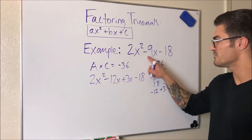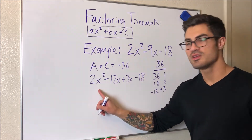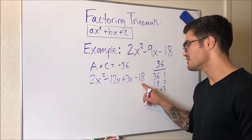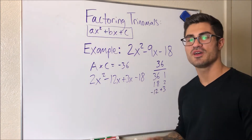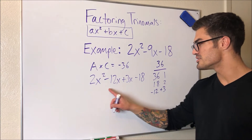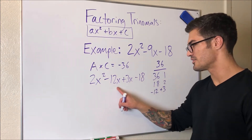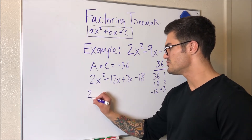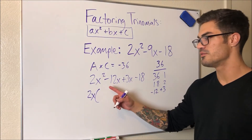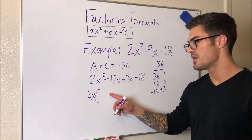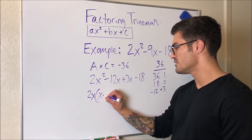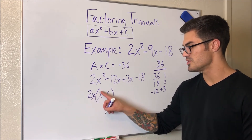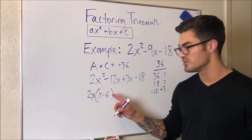This is still equivalent to the original — if I combine these like terms, I get right back up to where I started. What we can do now is take out a common factor from the first two terms and a common factor from the last two terms, and factor by grouping. The greatest common factor in the first two terms looks like 2x. So what do I have left? x minus 6. If I plug the 2x back in, I should get back to exactly what those two terms are: 2x squared minus 12x. So we're good to go.